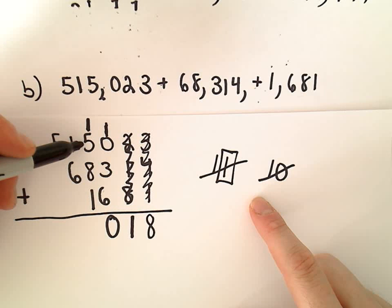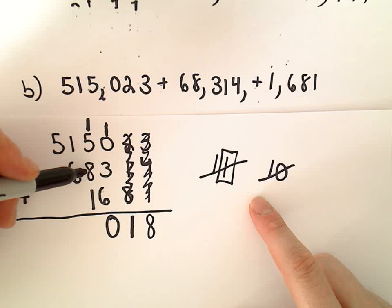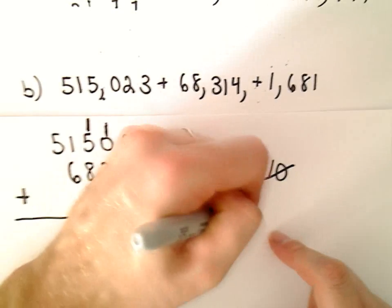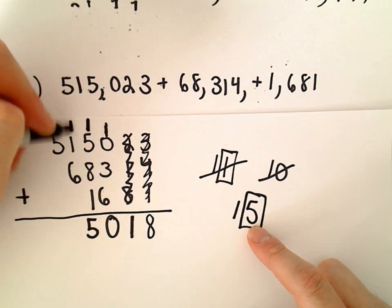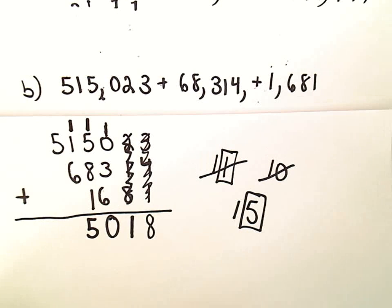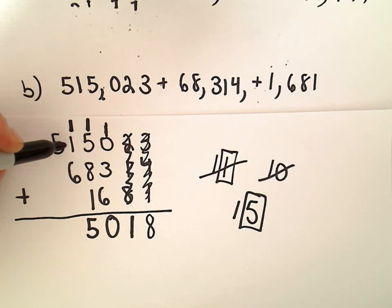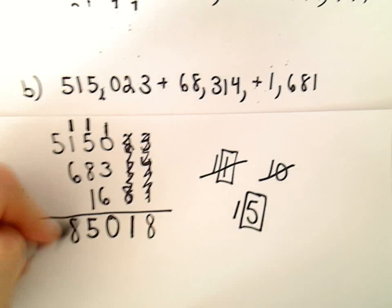So I've taken care of that column. 1 plus 0 is 1 plus 3, so 1 plus 3 is 4, 4 plus 6 is going to be 10, so again I'll keep the 0 and then carry the 1. So 1 plus 5 is 6, 6 and 8 is going to be 14, 14 and 1 is going to be 15. So again I'm going to keep that right digit and carry the other digit.